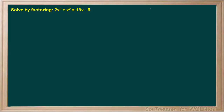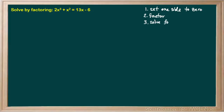Remember we have a three-step process to solve by factoring. Step 1 is to set one side of the equals sign to 0. Step 2 is to factor, and step 3 is to solve for the values of x that set each factor to 0.